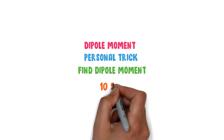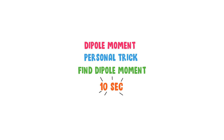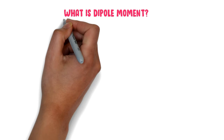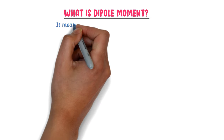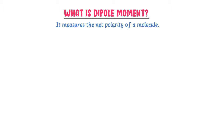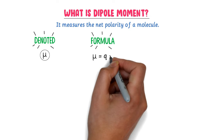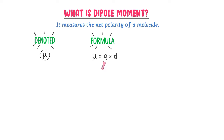Dipole moment — I will teach you my personal trick through which you can find the dipole moment of any molecule in less than 10 seconds. Firstly, let me teach you what dipole moment is. It measures the net polarity of any molecule. Dipole moment is denoted by the Greek letter mu. Its formula is mu = q × d, where q is the charge on an atom and d is the distance between atoms.